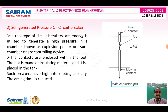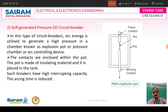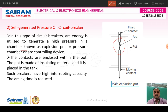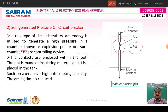The self-generated pressure oil circuit breaker does not have a first break and second break — it has only one break where the arc forms. These contacts are placed in a chamber known as an expulsion pot. Inside the pot there is oil, and the pot is made of insulating material and placed in a tank. Such breakers have high interrupting capacity and reduced arc time. Whenever a fault occurs, the arc is produced and the two contacts separate.